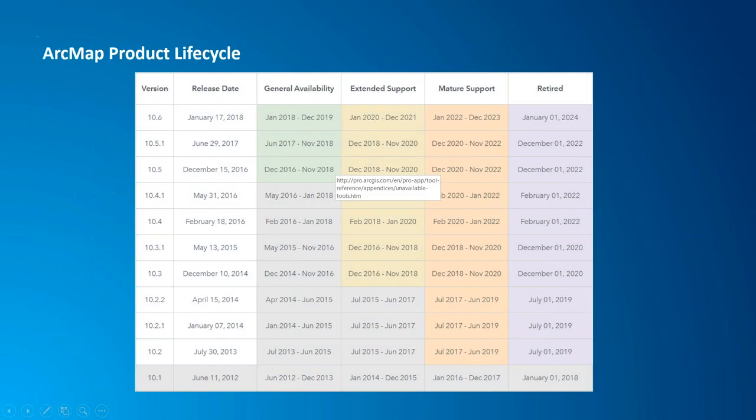Now is the time to start working with Pro, but just so you know — if you are an ArcMap user, it is supported for six years after the release date. Version 10.6 came out early this year, so it won't retire until January 1st, 2024. I want to alleviate fears that ArcMap is going away immediately — we're not developing it anymore, but we will support it for six years from the release date. That gives you time to port things over to Pro.